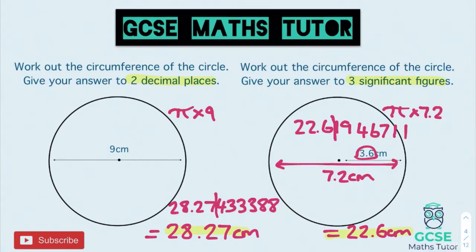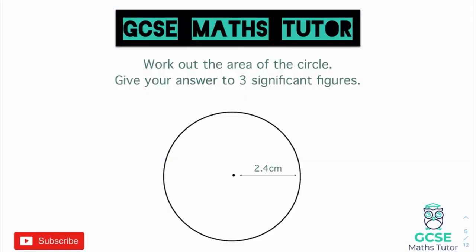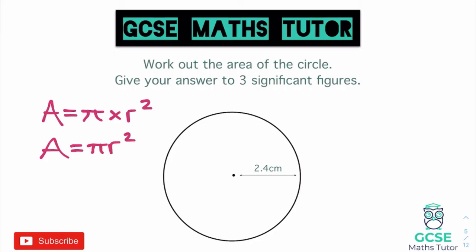That's how we work out the circumference of a circle. Now for area, we have a different formula. The formula for the area of a circle is: area equals pi multiplied by the radius squared. We don't write the times sign, so it's written as area equals pi r squared. You need to know how to find the squared button on your calculator — alternatively, you can just multiply the radius by itself.